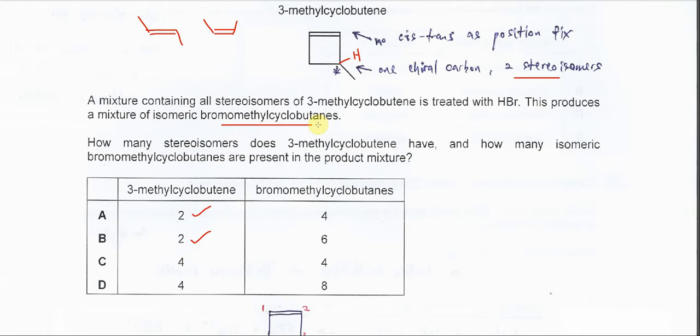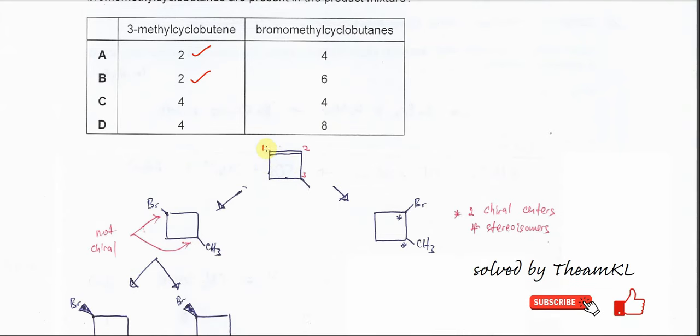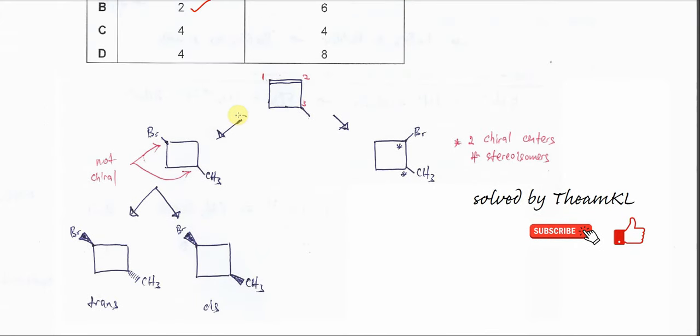Let's put the numbers on that. Let's put this one as first carbon, second carbon, and third carbon. If HBr is added, let's say the bromine now is added to the first carbon and the hydrogen is to the second carbon.